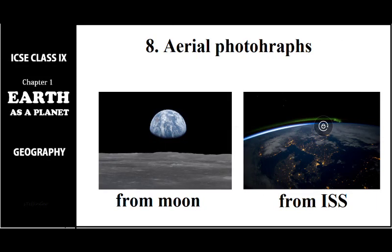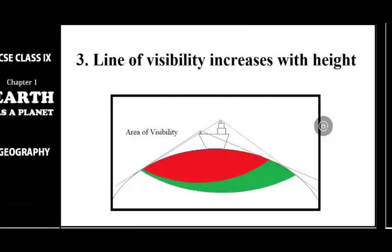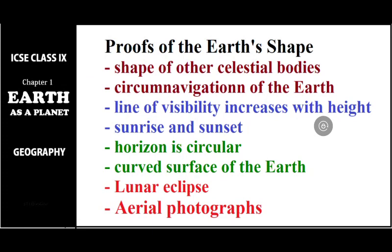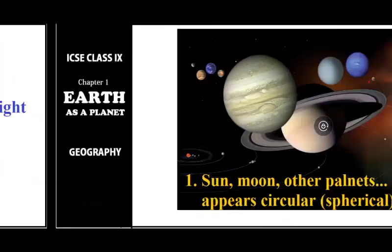The most technologically advanced proof is aerial photographs — photographs taken from a higher elevation. We have two photographs: one taken from the moon which clearly shows the earth's shape as spherical, and another taken from the International Space Station. These photographs confirm that the shape of the earth is spherical. These are all the proofs suggesting the earth is spherical.